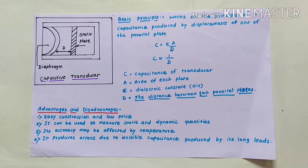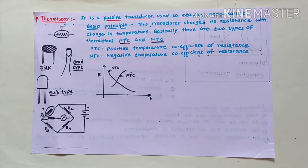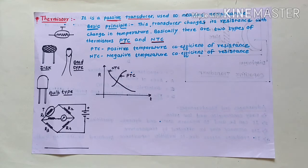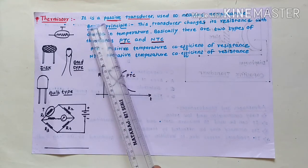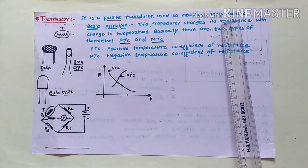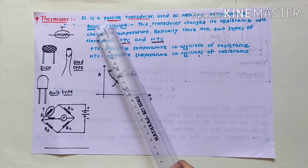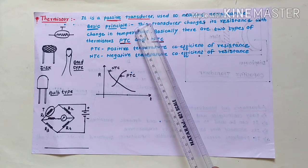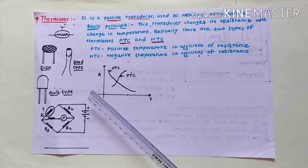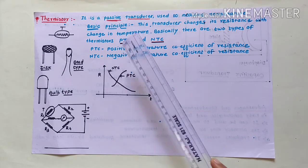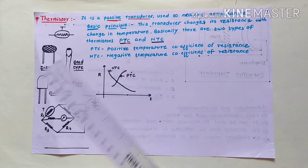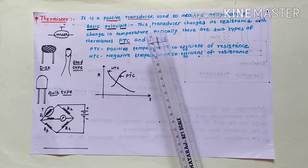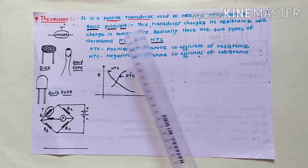Now let us see the next transducer — the thermistor. It is a passive type of transducer used to measure temperature. As it belongs to the passive category, it cannot generate self-energy, so it requires an external DC power supply to operate. The basic principle is that this transducer changes its resistance with a change in temperature.